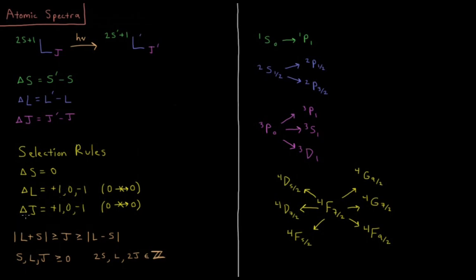And for delta j, delta j is going to equal plus 1, 0, or minus 1, again with the caveat that we can't go from 0 to 0. So for delta j, we can go from 0 to 1, we can go from 1 to 2, 1, or 0. From 2 to 3, 2, or 1, etc.